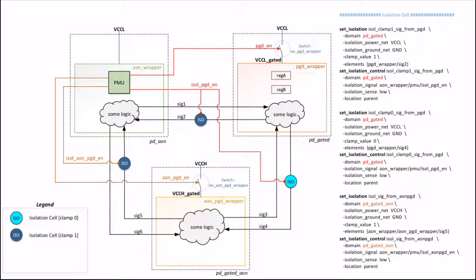Since signals are crossing different power domains, we need to implement an isolation strategy. The signals coming from the gated domain to the AON domain become X or unknown when power to the gated domain is cut off. Thus we need to clamp all input signals to the AON domain that come from the power gated domain. Therefore we have clamped signals sig2 and sig5 to a value. Normally this clamping value depends on the design, but since this is an example we have decided to clamp it to 1.